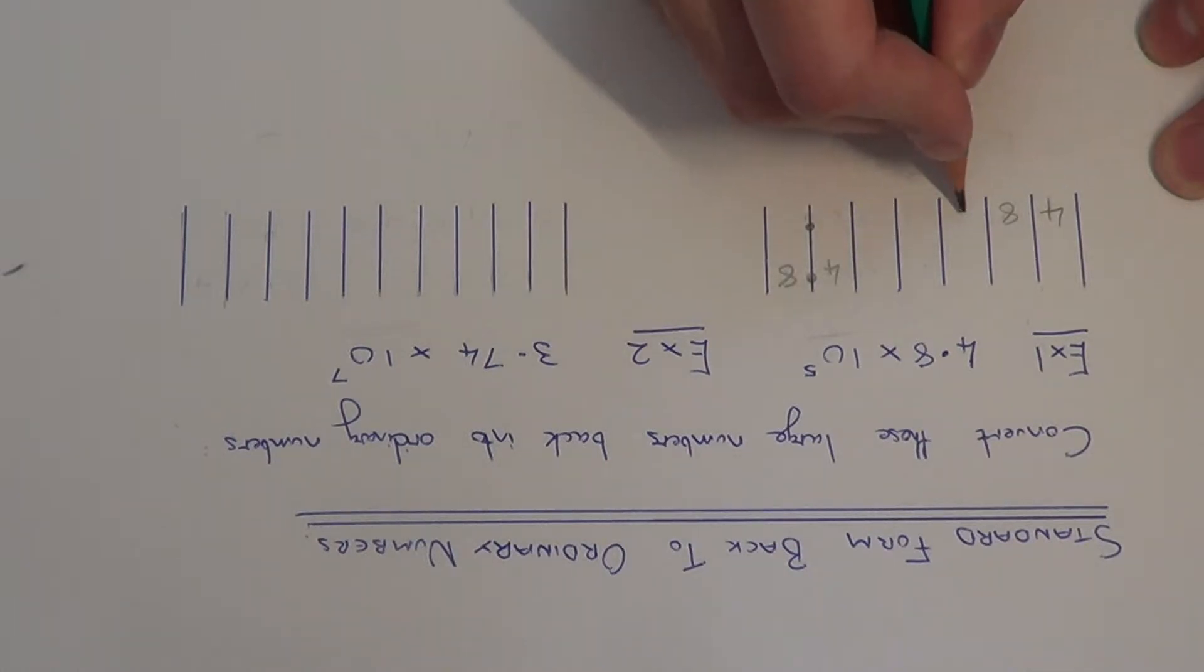The decimal point won't move. All you need to do now is just fill in the gaps with 0s. So our final answer will be 480,000.